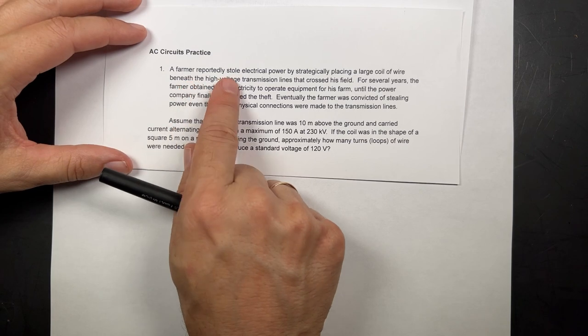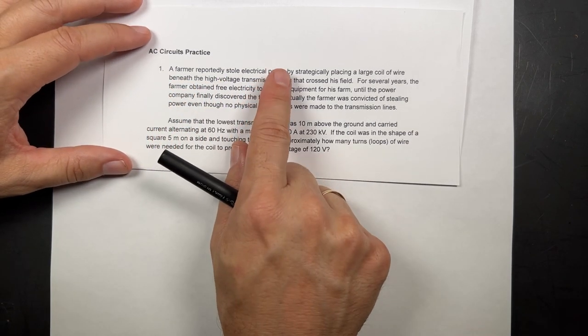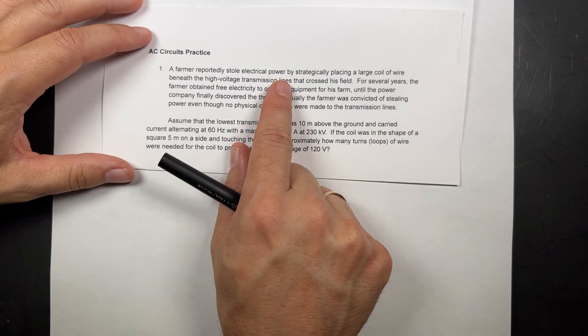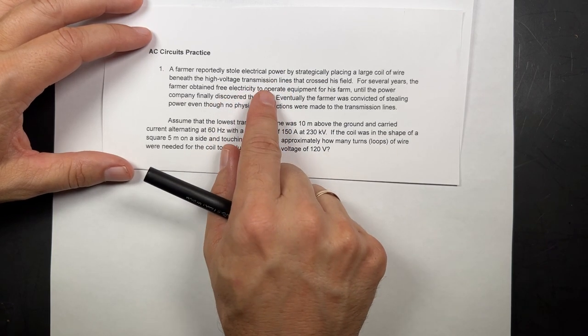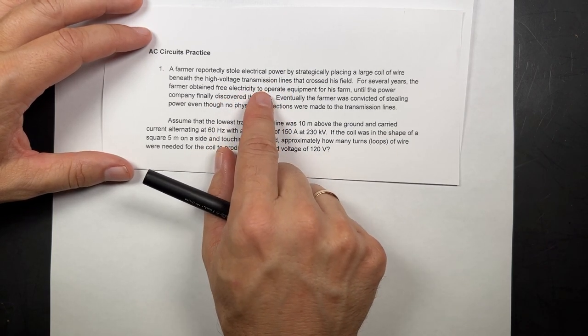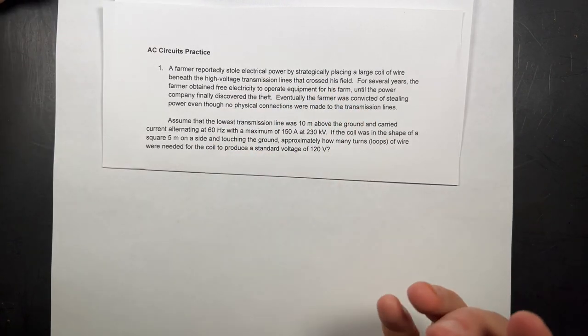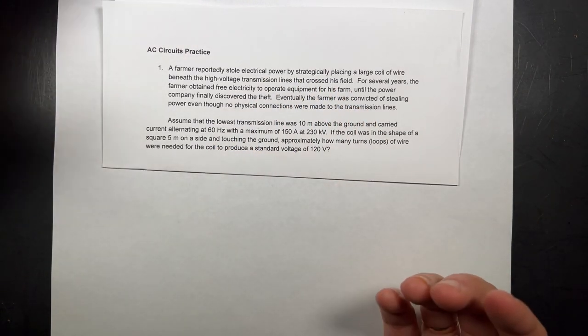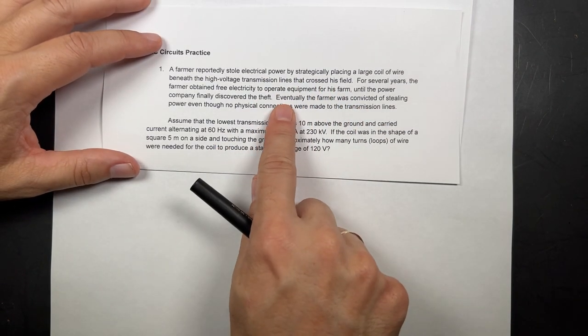So, I found this online, but I've always heard this was a real story, and I don't know if it's just a legend or not. But the idea is this farmer stole electrical power by putting a large coil under a high voltage transmission line. And so, that was free, you can get free electricity, in theory you can. And I'll show you why.